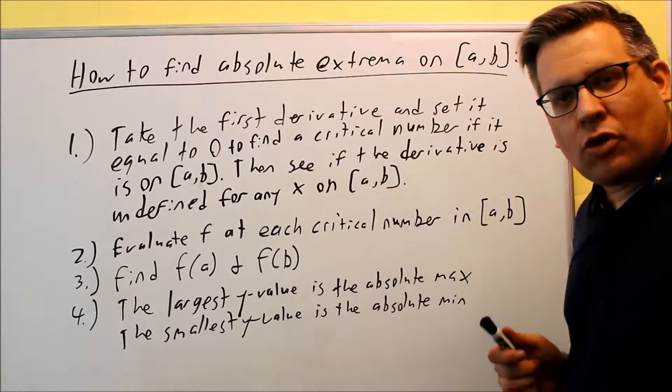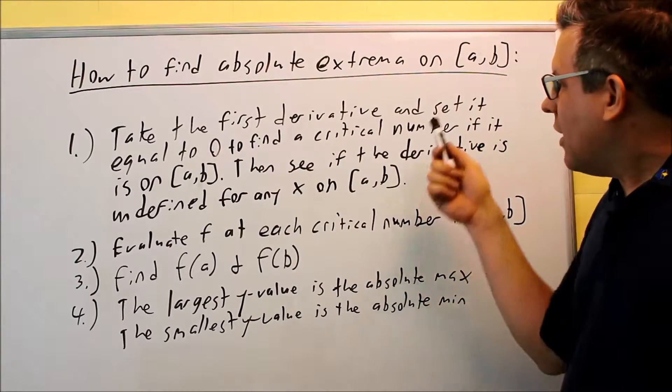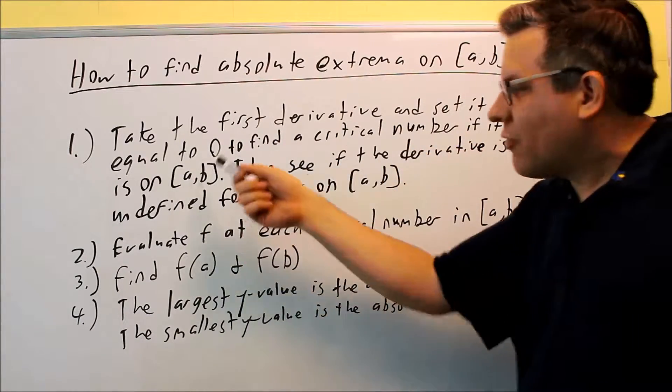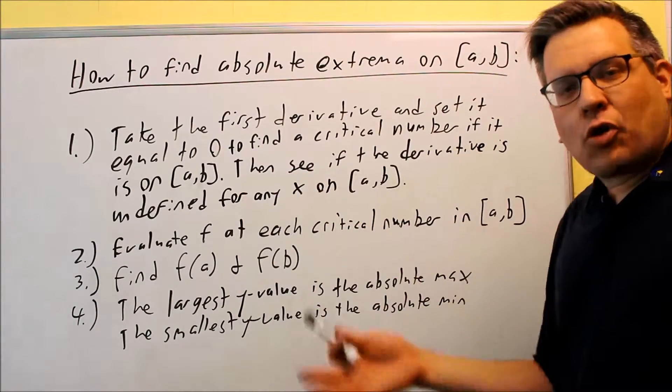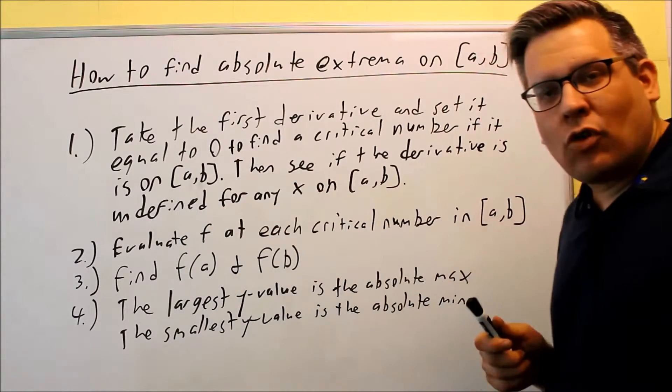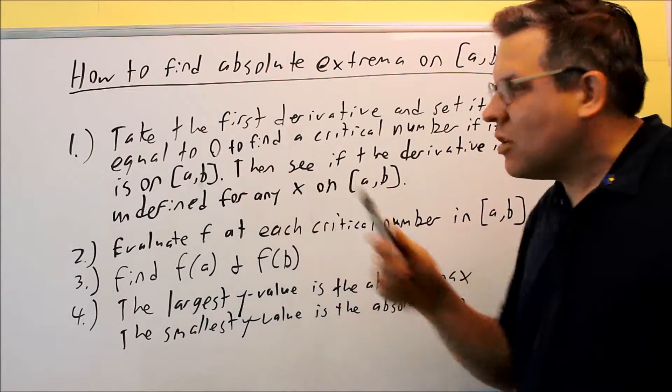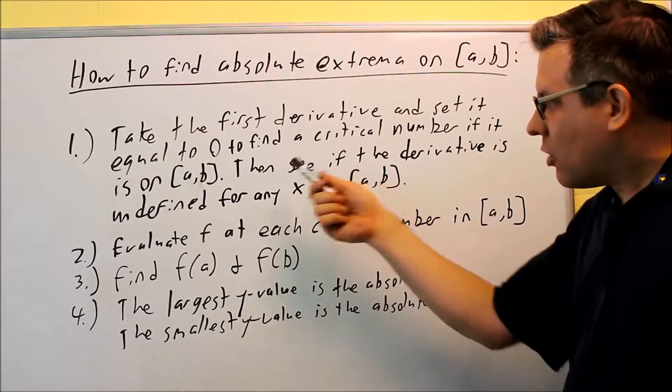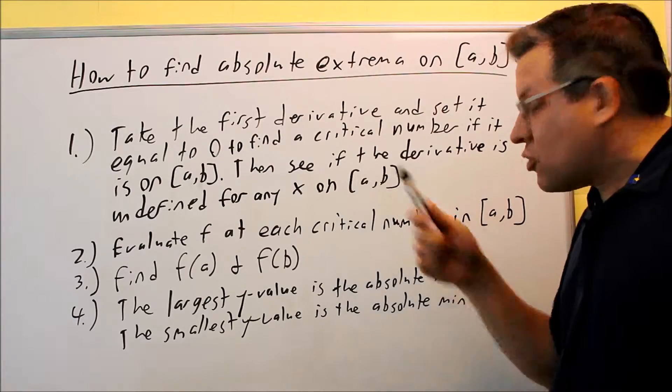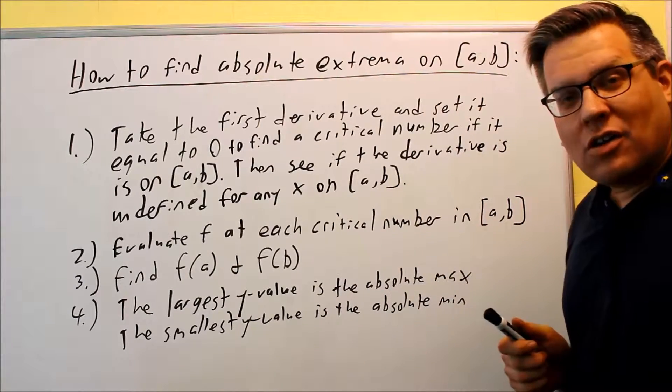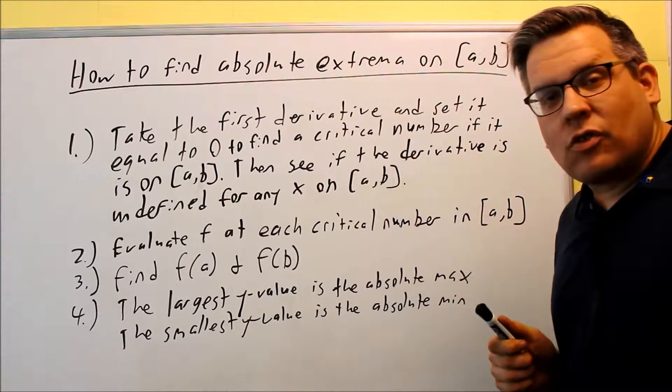The first thing you want to do is find the critical number. Two ways: you take the first derivative, set it equal to zero, and you're going to find that's a critical number if the value c that you get happens to fall in an interval between a and b. Now if you find a couple critical numbers and one of them does not fall on that interval, then you're going to ignore it. We're only going to look at values between a and b. Also you have a critical number if the derivative is undefined for any of the numbers between a and b. Only from a to b is where you're looking.